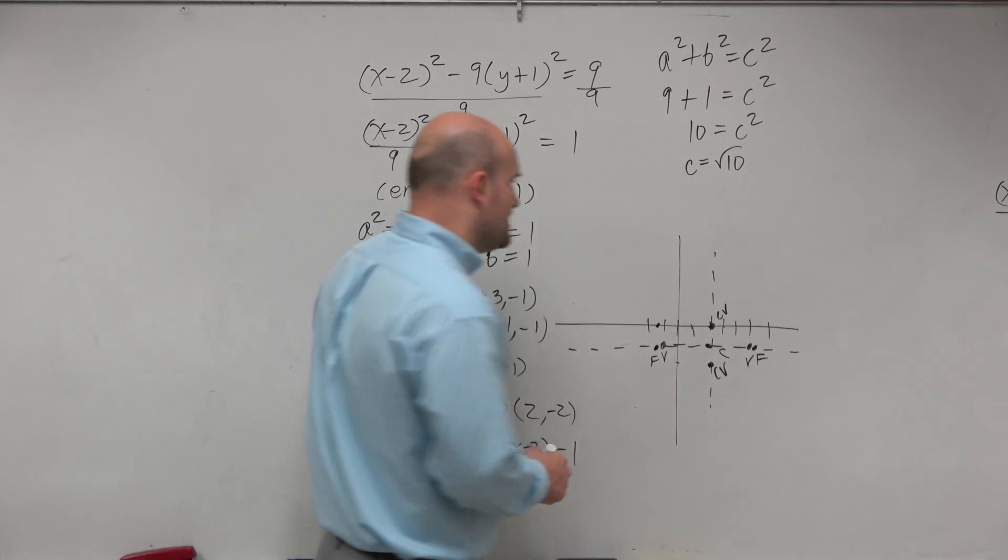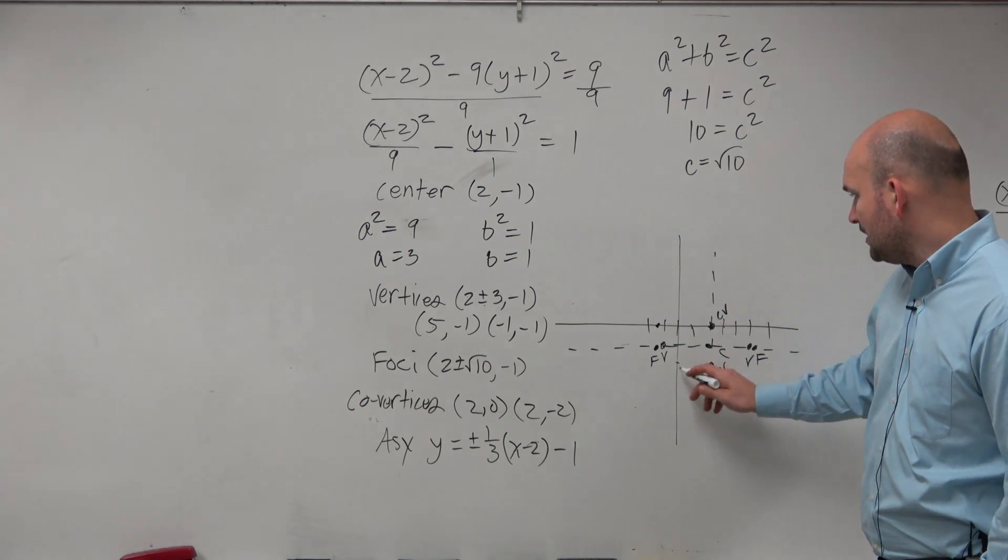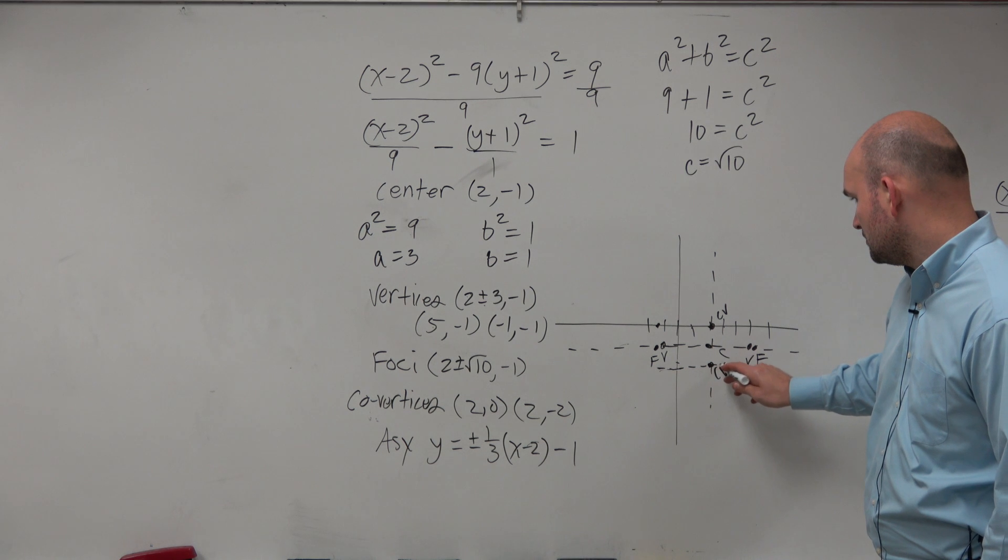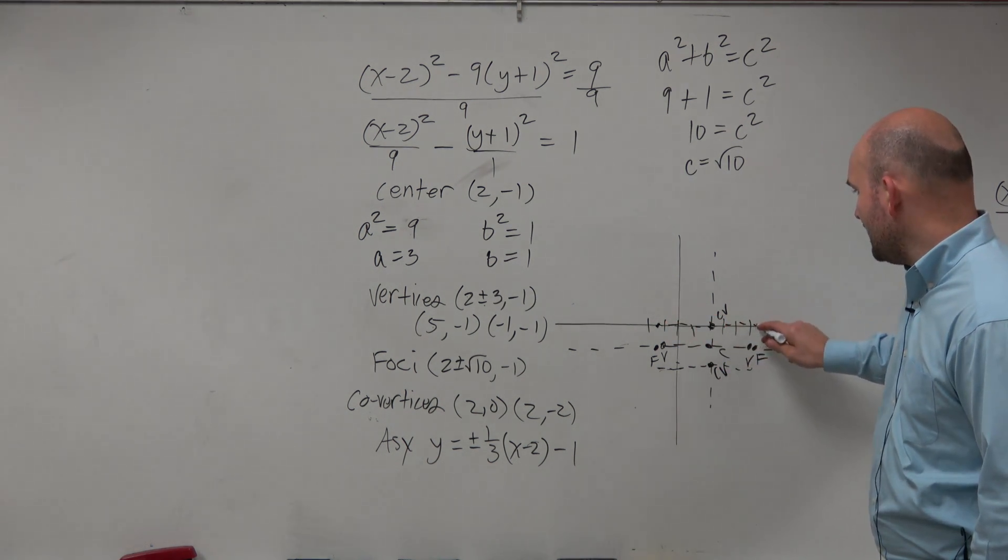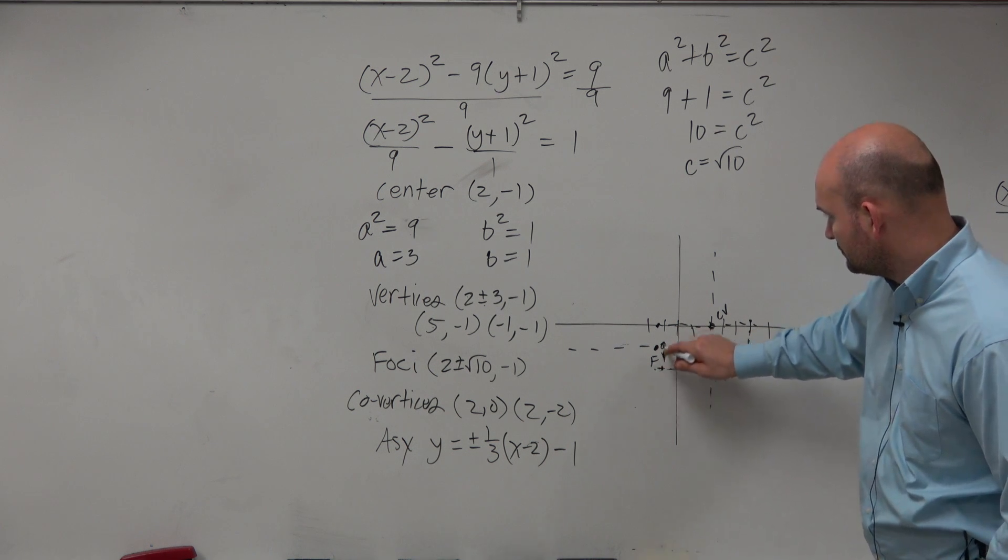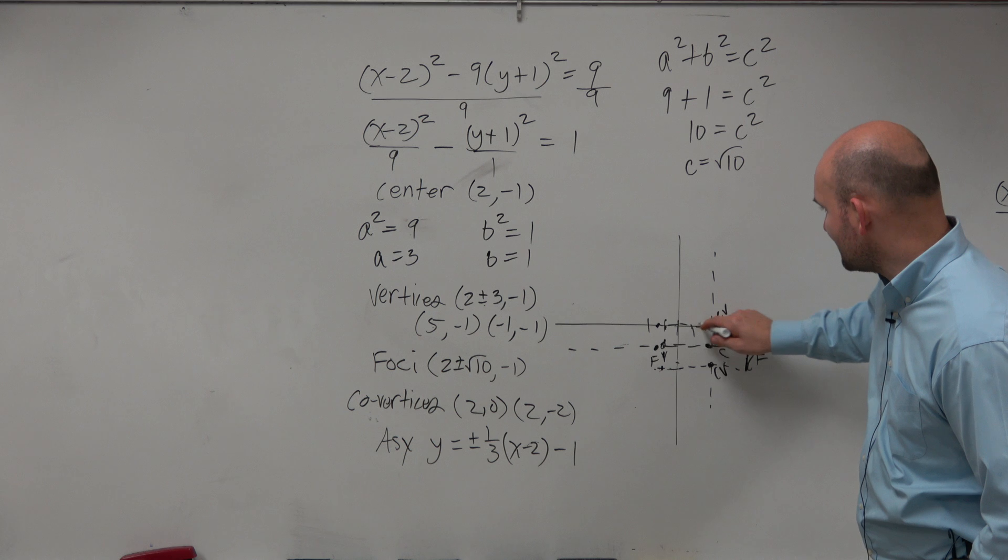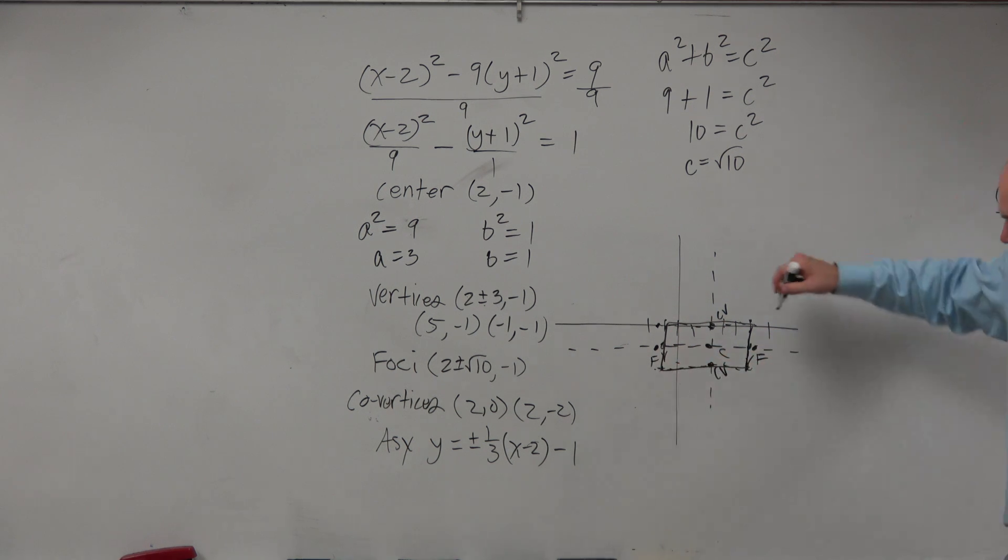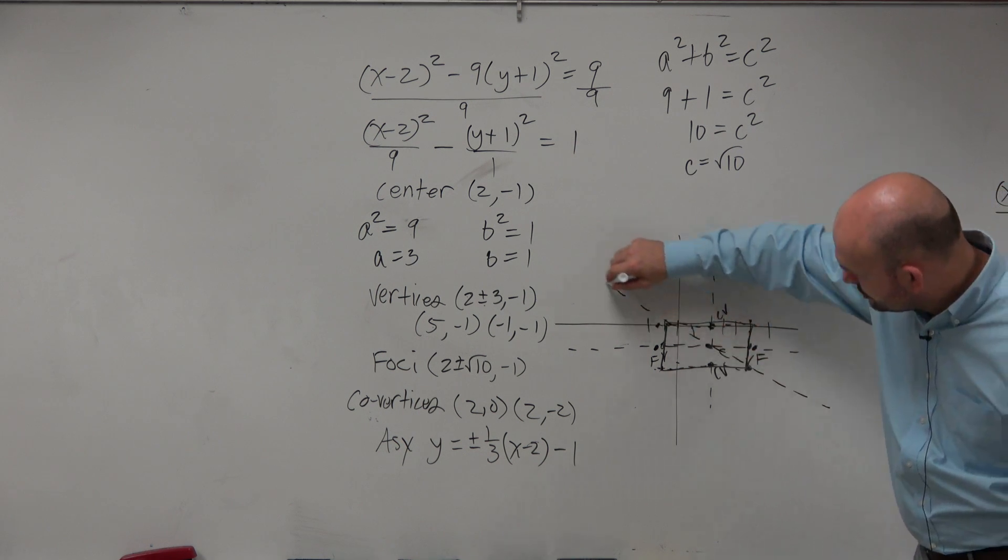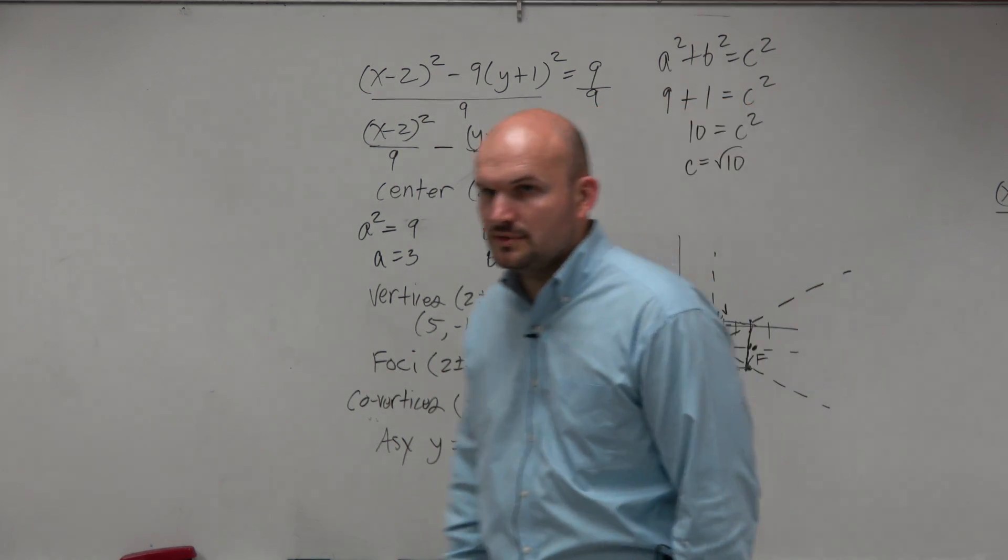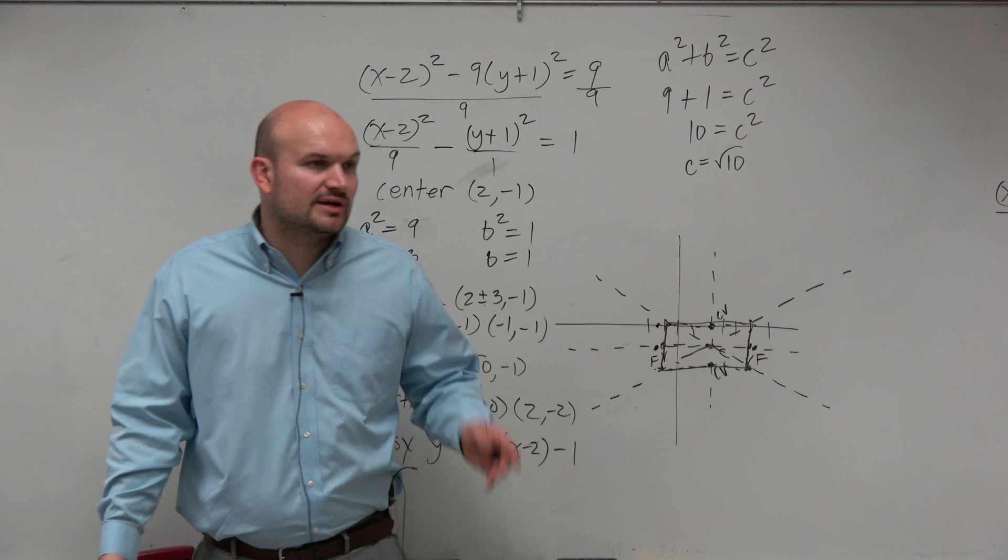So the trick that I said was, you could take your co-vertices and draw horizontal lines through your co-vertices. Then you can take your vertices and draw horizontal lines. And what you see is, we kind of create this box. The corners, through the corners, the center, and the box is where your asymptotes are going to be. So that's like an easy way to create the asymptotes.